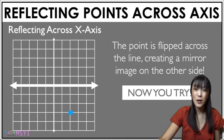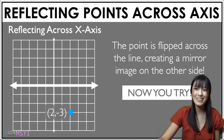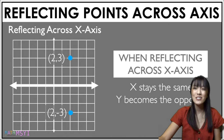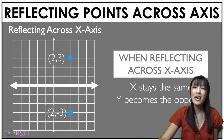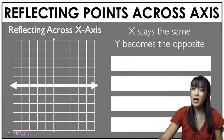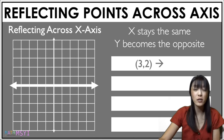Let's do one last one. Put your finger where you think the new coordinates will be. Let's animate it. Now think of the coordinate points — they are 2, positive 3. As a reminder, when you're reflecting across your x-axis, x stays the same and y becomes opposite. Now I'm just going to give you the coordinate points, and I want you to figure out what the reflected coordinates are going to be.